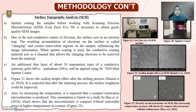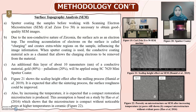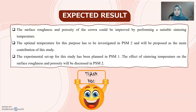Figure 21 shows the scallop height effect after the milling process. It is expected that after the sintering process, the surface roughness could be improved. With increasing temperature, a compact restoration microstructure is expected to be produced. This assumption is based on a study which shows the microstructure is compact without noticeable pores at high temperature in ceramics. Figure 22a shows porosity still present at 1450 degrees Celsius, while Figure 22b shows the compact microstructure without pores at 1650 degrees Celsius. The surface roughness and porosity of the crown could be improved by performing sintering at a suitable temperature. The optimal temperature will be investigated in PSM 2 and will be proposed as the main contribution of this study. The experimental setup has been planned in PSM 1. Thank you.